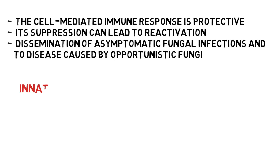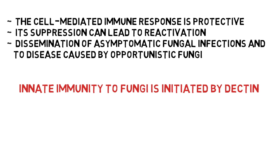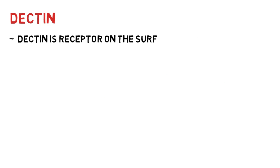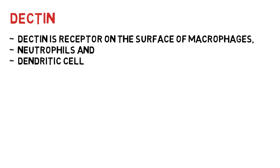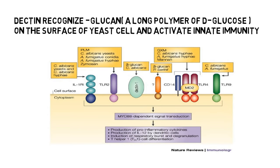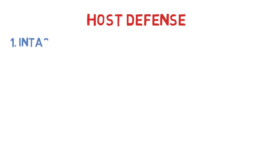Innate immunity to fungi is initiated by dectins. Dectin is a receptor on the surface of macrophages, neutrophils, and dendritic cells. It recognizes beta-glucan on the surface of yeast cells and activates innate immunity against the fungal infection.